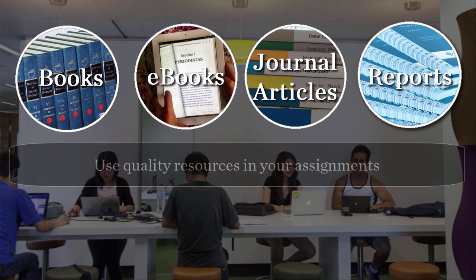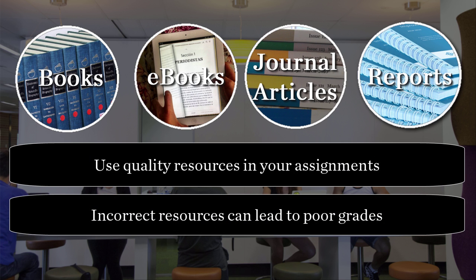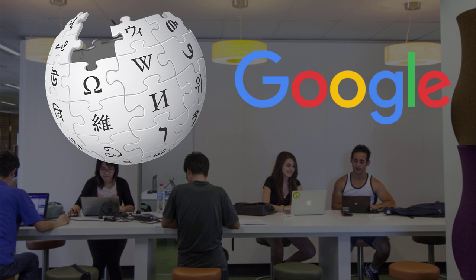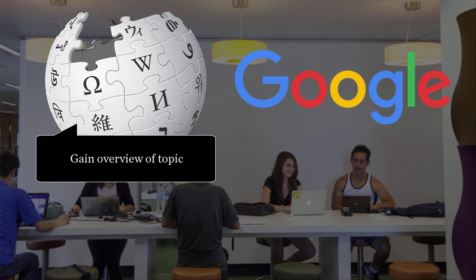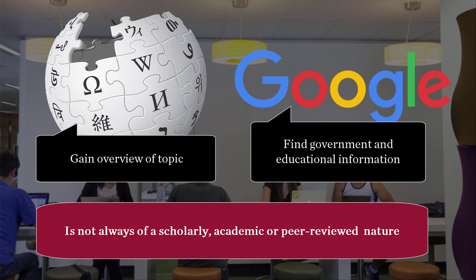It is important to use quality resources in your assignments. Using the incorrect resources can lead to poor grades. Many students use Wikipedia and Google when they start looking for information. Wikipedia can be useful in gaining an overview of a topic, and you can use Google to find a lot of government and educational information. However, the information found in Wikipedia or through Google is not always of a scholarly, academic or peer-reviewed nature.